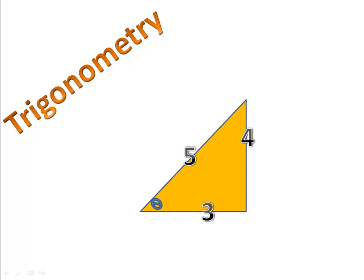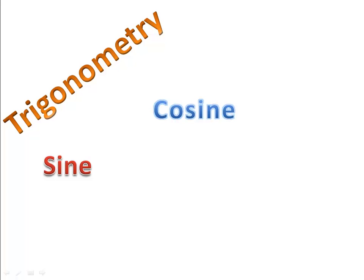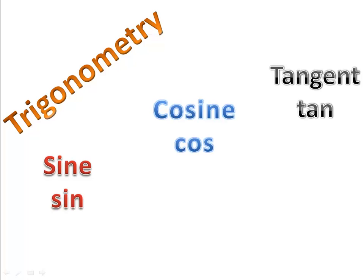Let's take a moment and look at a triangle. We want to look at three ratios. The three ratios are called the sine, the cosine, and the tangent. And because mathematicians are lazy, we have abbreviations for them: SIN, COS, and TAN.